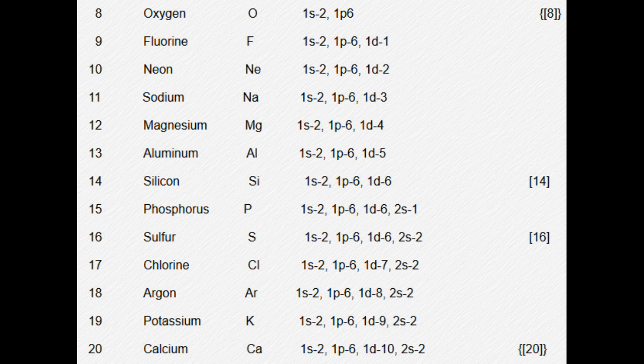I decided to add up all the numbers — I did two different things. I added 2, 6, then 8, 14, 16, and 20 to get the complete shells up to that point. And then I just added 8, 14, 16, and 20 and found the corresponding elements. I'll show you those now.